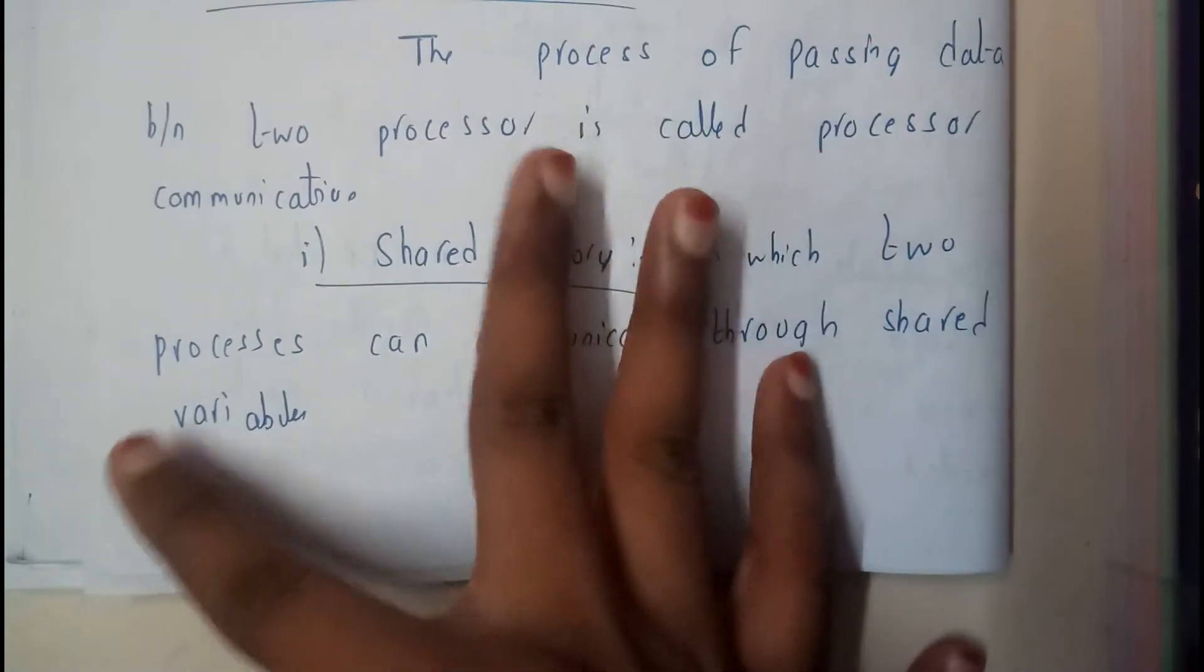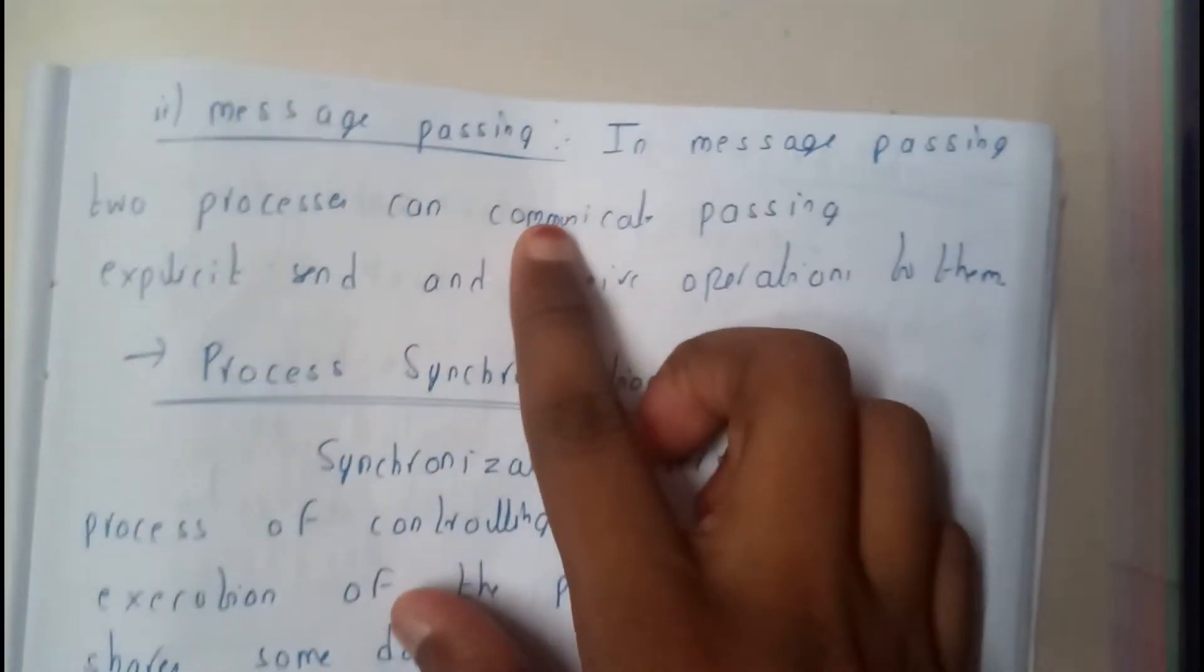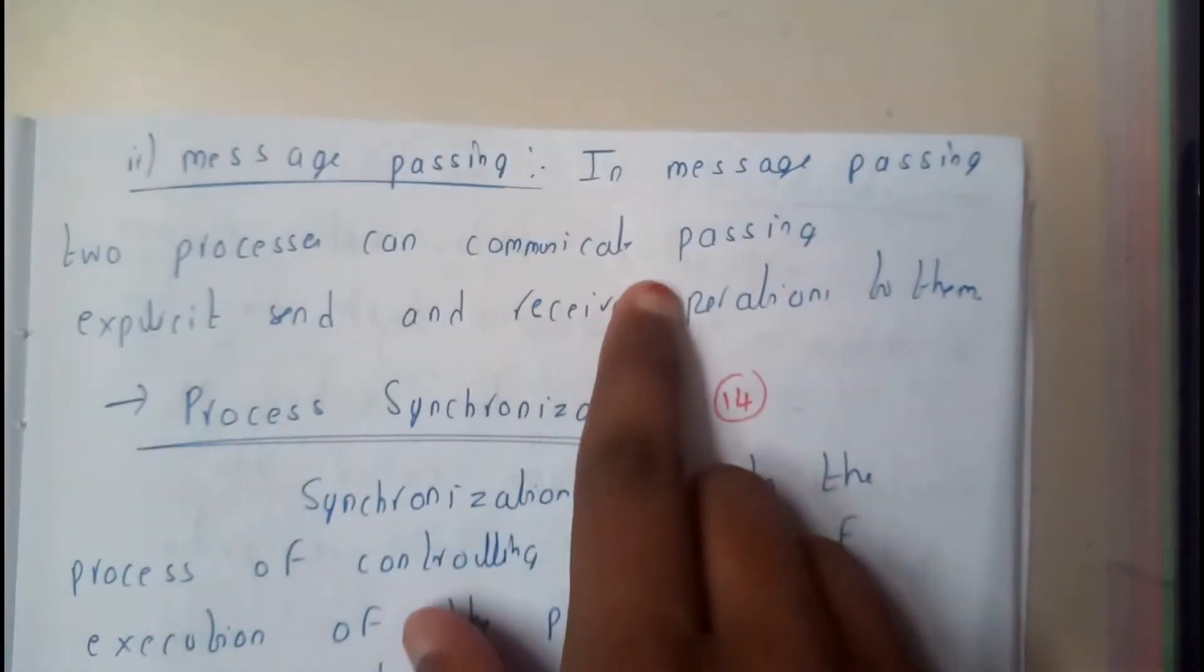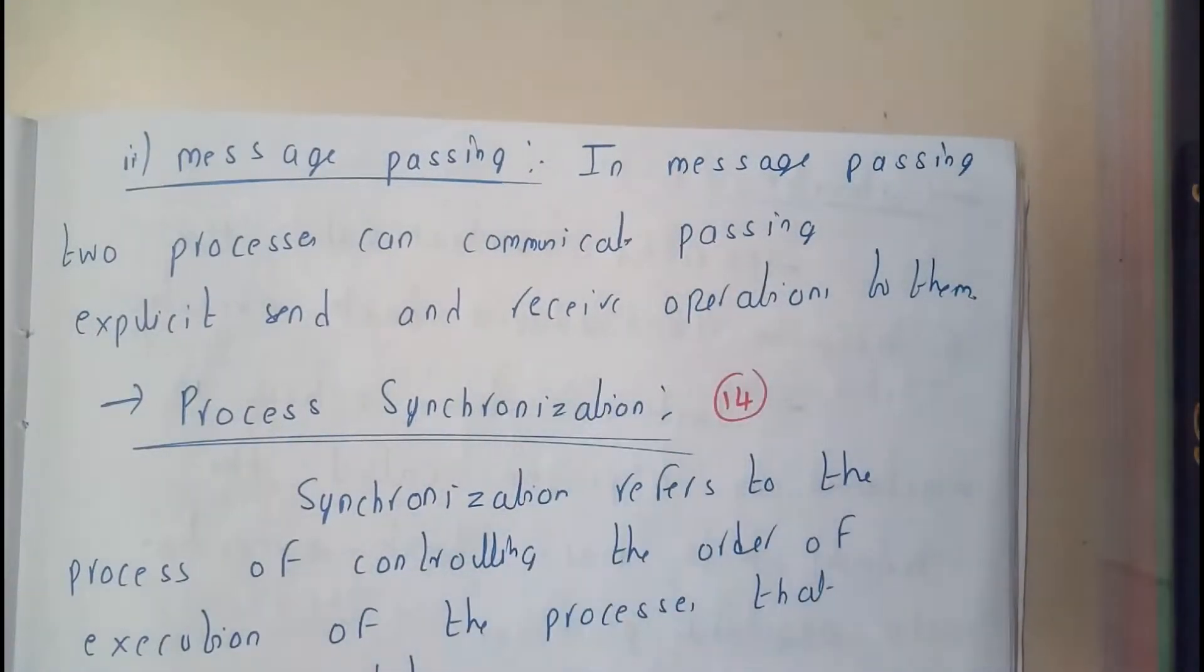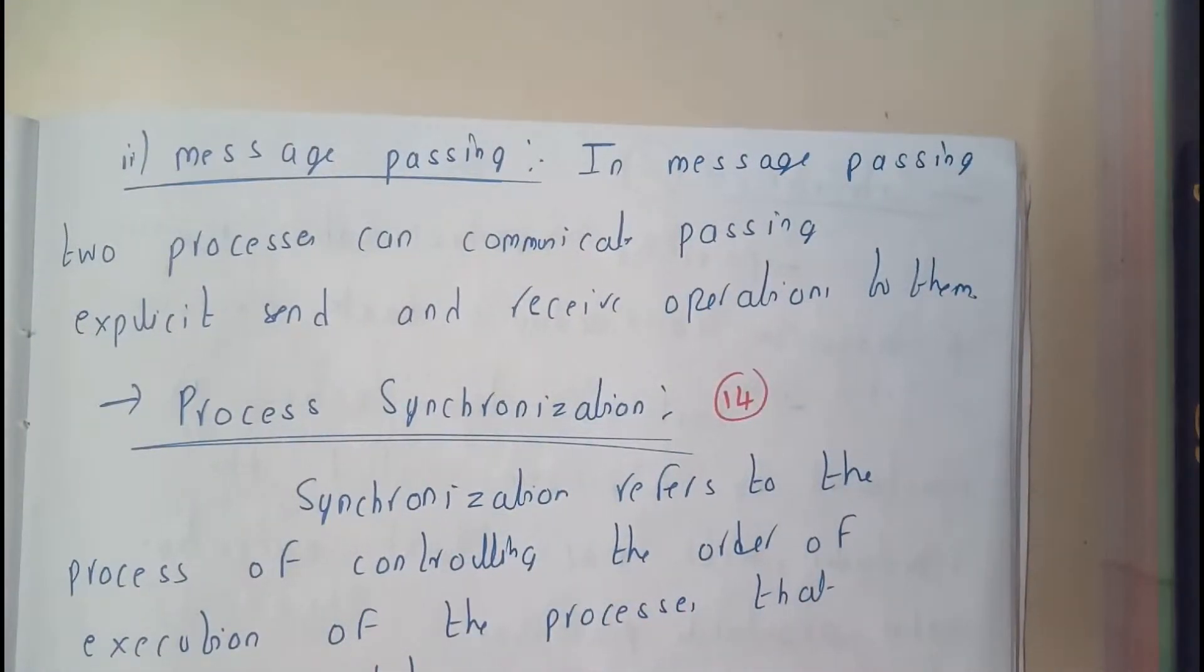Any of the processors can access them whenever they need, guys. And we are also having message passing. So in message passing, two processors can communicate by passing explicit send and receive operations between them.